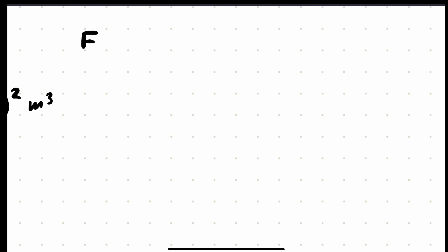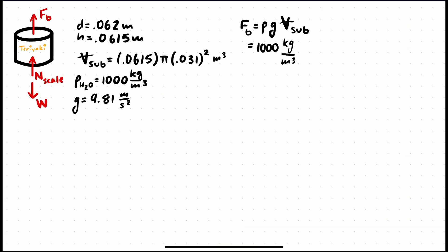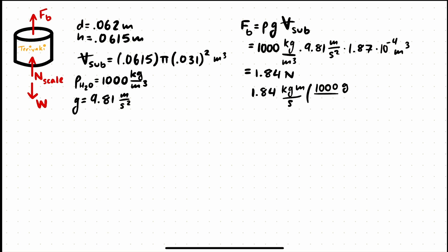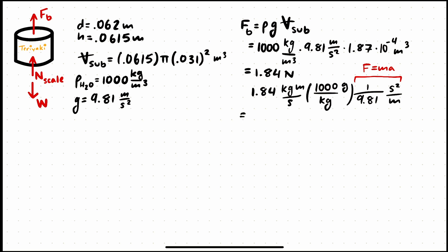From fluid statics, we know that the buoyant force equals density times gravity times the volume of the submerged object. After crunching those numbers, we got that the buoyant force on the teriyaki sauce equals 1.84 newtons. We can convert this value to grams using f equals ma, and we get 187 grams.